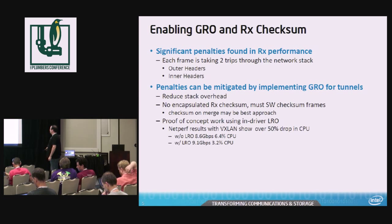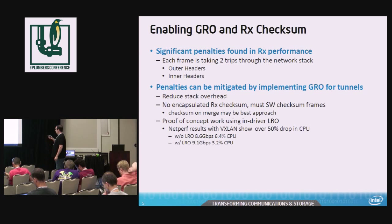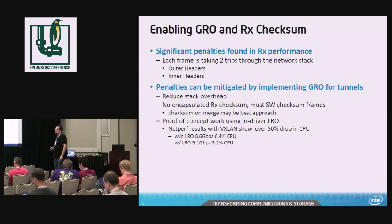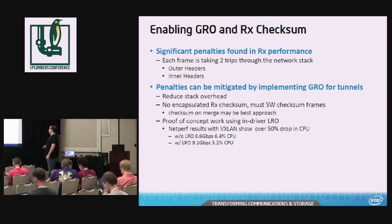Checksum on merge instead of checksum always. Proof of concept results: it cut the CPU utilization in half, which I figure is pretty significant given that this is hardware that doesn't actually support any of this. Future hardware is going to have support for RX checksum at least, so at that point we can probably just do GRO without the extra checksum work. It may be something where we implement GRO and then have an add-on for a while to do the RX checksum if it's needed on a merge.